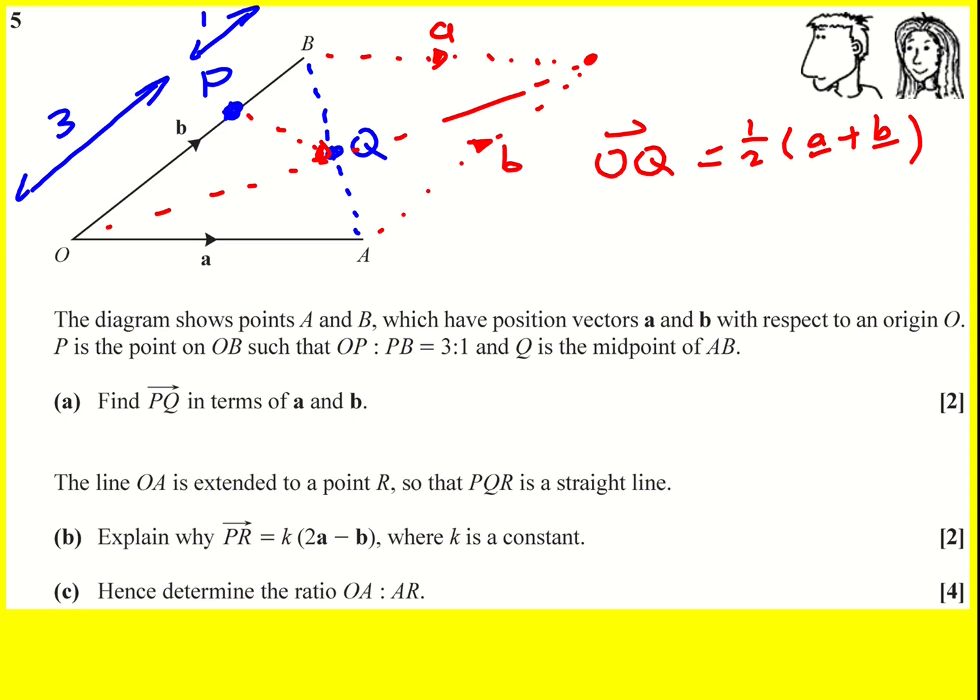And then we're nearly there. So PQ is going to be PO plus OQ and PO is going to be minus three quarters of b because remember it's in the ratio 3 to 1. So I've got three quarters of it, but I'm going from P to O so it's minus. And then I can add a half a plus a half b. I just expanded the bracket from above, which is going to give a half a minus a quarter b. And that is what PQ is.